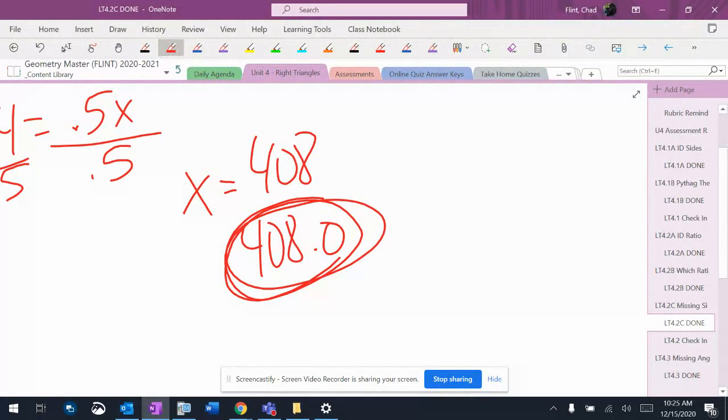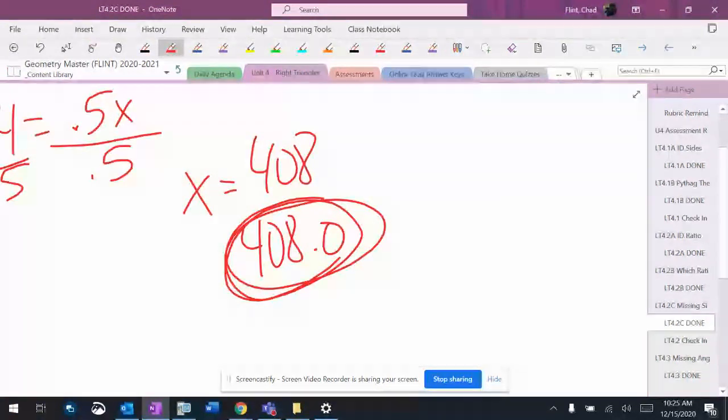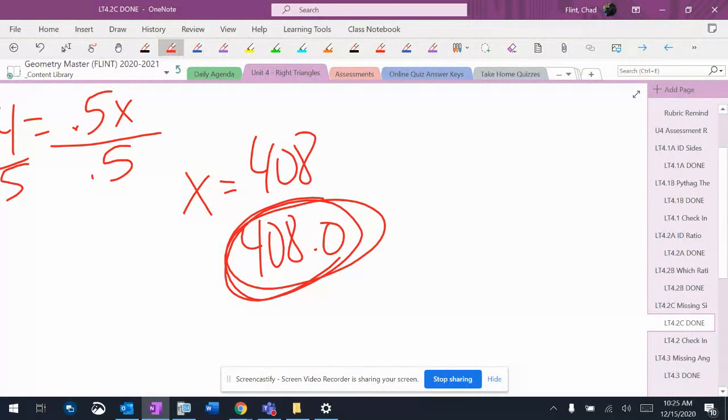But when you go to higher level classes, if you're going to take an IB class, it will matter. So make sure you read it. I mean, definitely, it shows that you read the problem really well if you do have the .0 on the end.